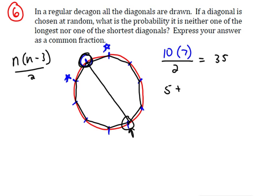How many are the shortest? Well, the shortest is going to be connecting a point, not with the one next to it, because that's a side, but with one that is two vertices away, and it can go both ways. So for each vertex, there are two shortest diagonals possible.